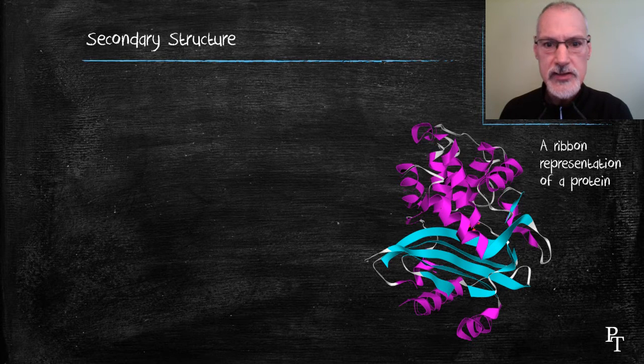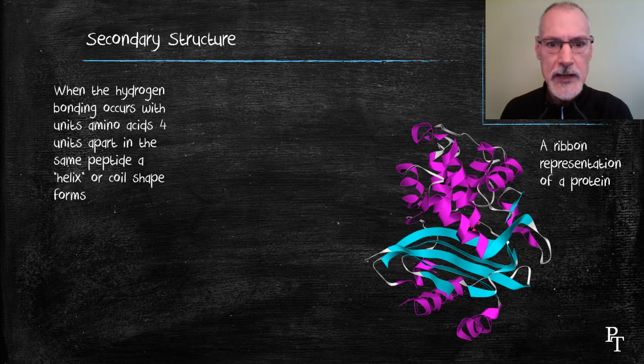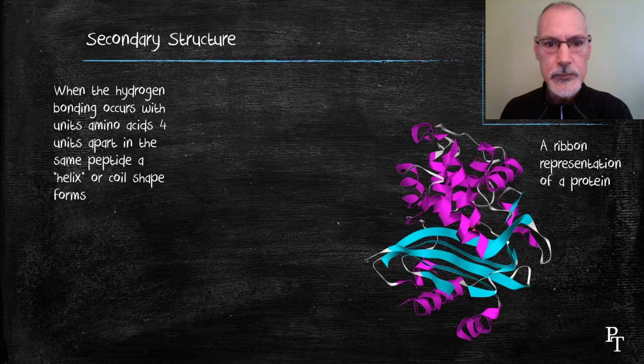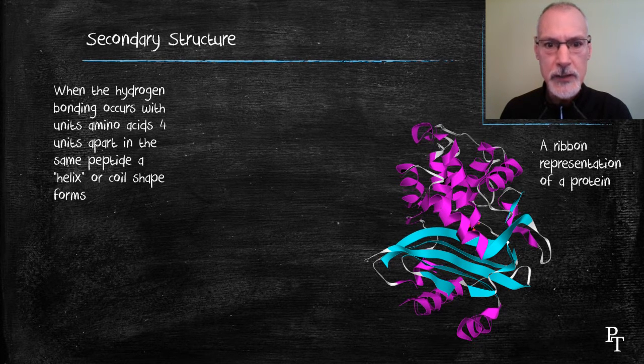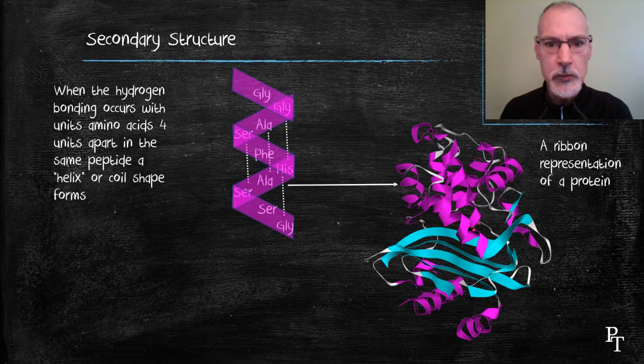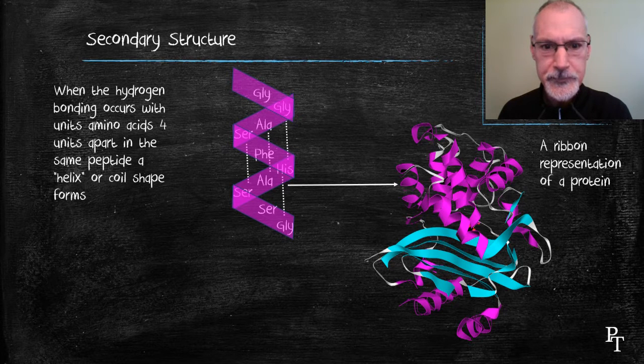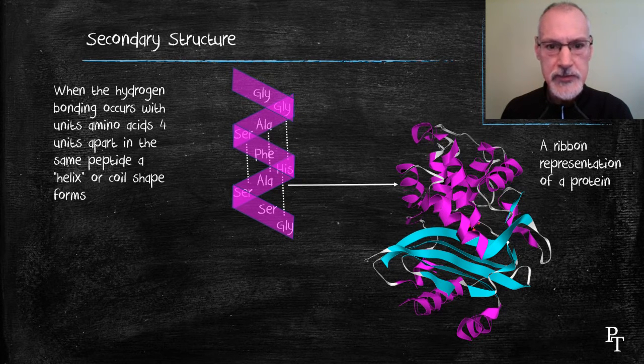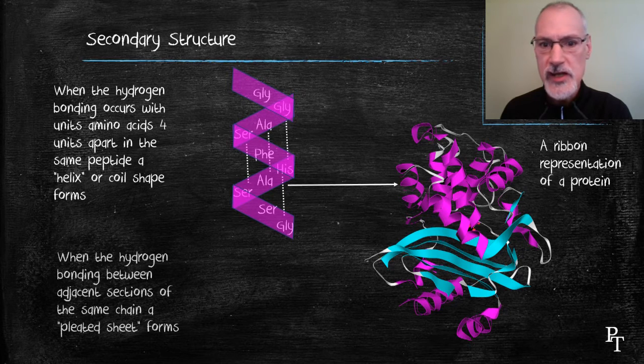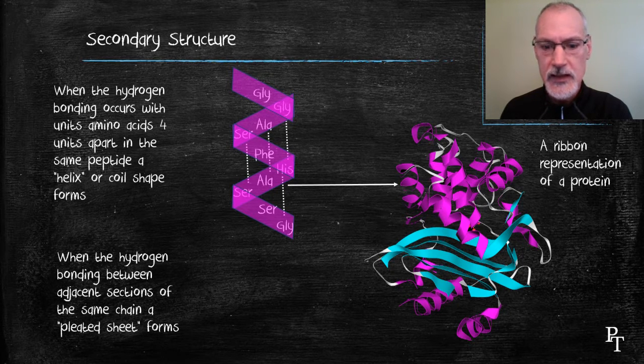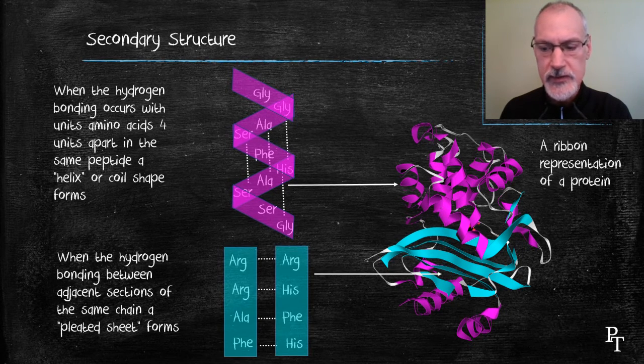First of all, the coiling-like structure results from hydrogen bonding that takes place between amino acids on the same polypeptide chain that are approximately four units apart. You can also get hydrogen bonding taking place between adjacent chains of the polypeptide, and that leads to the sheet-like structures that we see below.